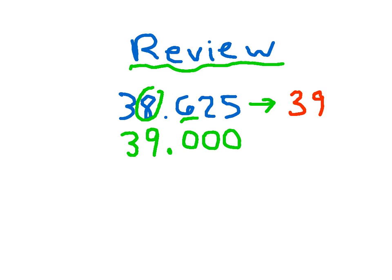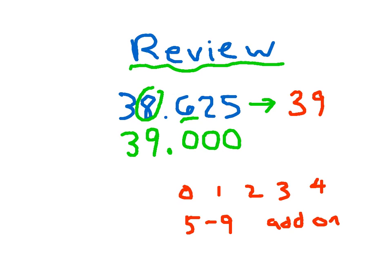Say this whole thing: 38 and 625 thousandths rounds to 39. And that's how it is that we round. Remember, don't write .0, don't write .00. Remember to follow your rules for rounding: it's 0, 1, 2, 3, 4 for that underline digit where the circle stays the same, and if it's 5 to 9, you add 1 to that circle digit.